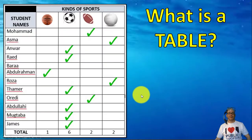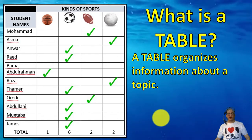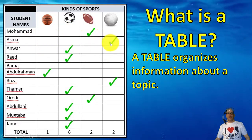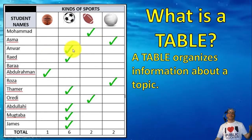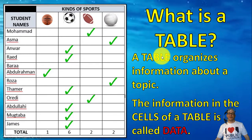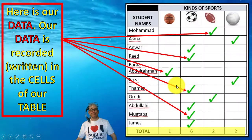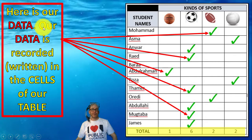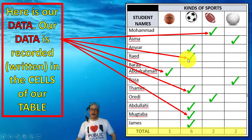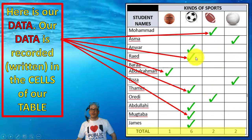So what is a table? A table organizes information about a topic. We can see on this table — when I ask what is your favorite, I like volleyball, and one says soccer. I can record their responses on my table. The information in the cells of a table is called data. Our data is recorded — recorded means written in the cells of our table. We put our information or data in the cells of the table.